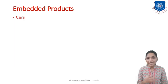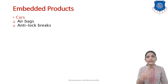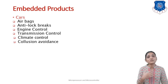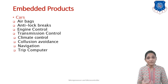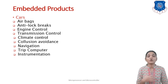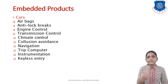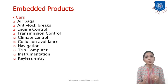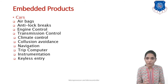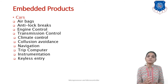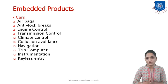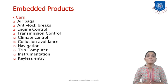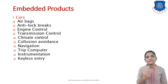In automobiles, embedded systems include airbags, anti-lock brakes, engine controls, transmission control, climate control, collision avoidance, navigation, trip computers, instrumentation, and keyless entry. All these things require some control to operate. Whenever you require some control, you use a controller, and by using that controller, your system becomes embedded.